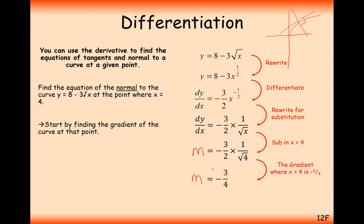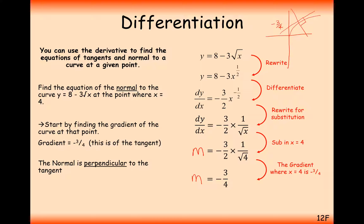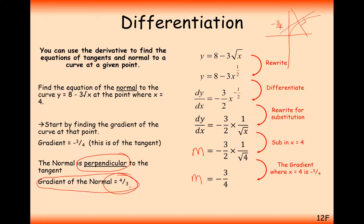This minus 3 over 4 is the gradient of the graph at that point. From this, we can work out the gradient of the perpendicular, which will be 4 over 3, because these two numbers multiply together to make minus 1. So for the equation of the normal, we're going to use the m value of 4 over 3. If it were a tangent question, we'd stick with minus 3 over 4, but as it is a normal — perpendicular to this line — it's going to be 4 over 3.